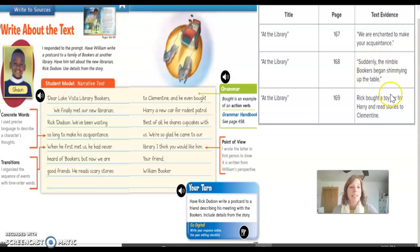Okay, in the next example it says, suddenly the nimble bookers began shimmying up the table. The word suddenly is a transition word that they use in the story to show the sequence of events. Okay.